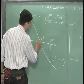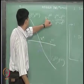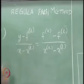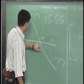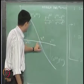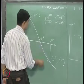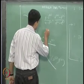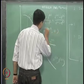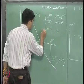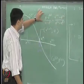The point of intersection of this particular straight line with the x-axis is obtained by putting y equal to 0. This particular point x_{i+1} comma 0 lies on this line, so it satisfies this particular equation.